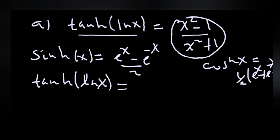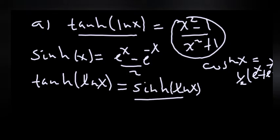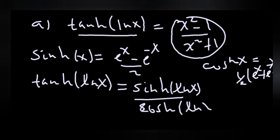So, tanh(x) is equal to sinh(x) over cosh(x), which is (e to the power of x minus e to the power of minus x) over (e to the power of x plus e to the power of minus x).